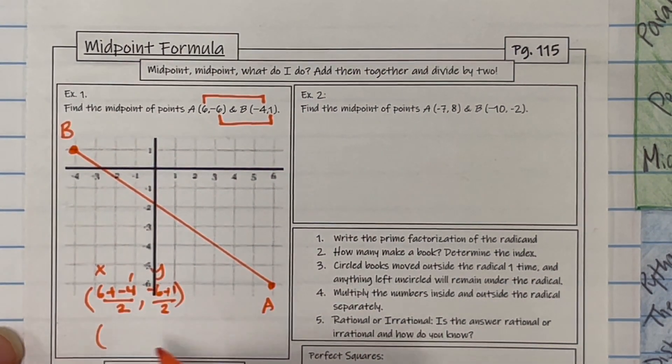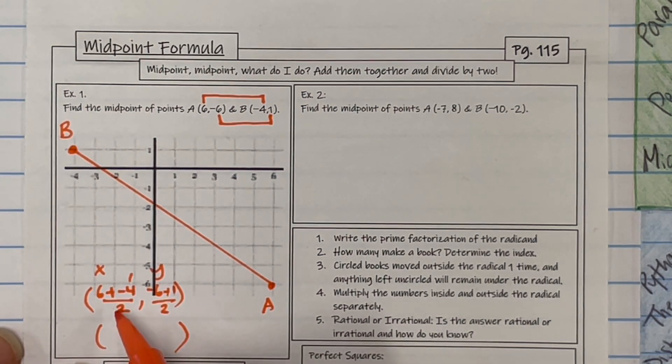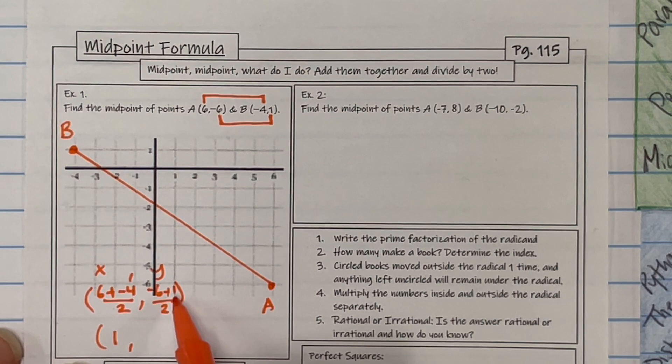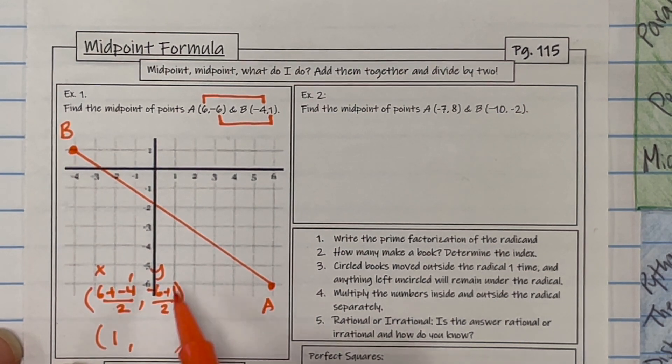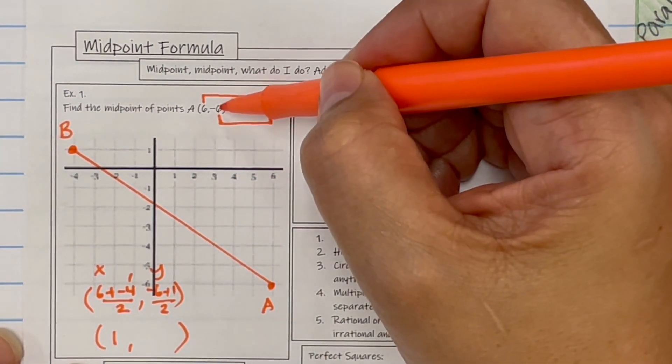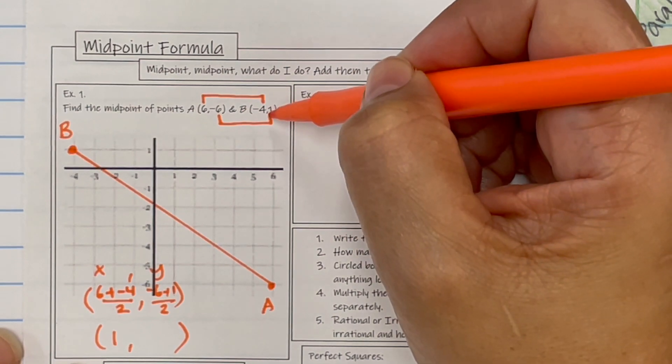Put that straight in a calculator and you're going to get the midpoint. The midpoint is 1, negative 5. Whoa, something's up. Negative 6 plus 1 is negative 5.